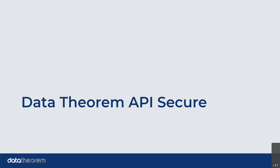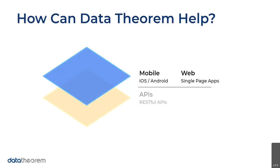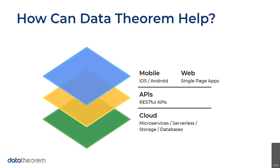I'll talk about Data Theorem's product, API Secure. This is our depiction of a full stack — the front end client is mobile or web, supporting iOS and Android, with web being single-page apps. Then there are oftentimes hundreds of APIs in the back end, pushing and pulling data to and from the cloud. You might use microservices, storage buckets, or databases in the cloud. This is how we see the modern software architecture and modern stack.